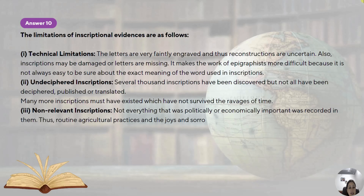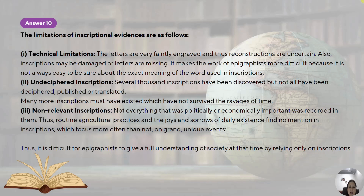Now let's talk about the limitations of inscriptional evidence. Technical limitation: these inscriptions are thousands of years old, so the letters have become very faint over time, they are faintly engraved and reconstruction is therefore difficult. Inscriptions are at times damaged and letters are missing, which makes the work of epigraphists more difficult because it is not always easy to be sure about the exact meaning. Undeciphered inscriptions: there are several thousand inscriptions which have been discovered but not yet deciphered — they cannot be read or translated to date. Many more inscriptions must have existed which have not survived the ravages of time — they are destroyed. Non-relevant inscriptions: not everything that was politically or economically important was recorded in them. Routine agricultural practices and the joys and sorrows of daily existence find no mention in inscriptions, because inscriptions were basically issued by the king and did not contain much information about the lives of common people.